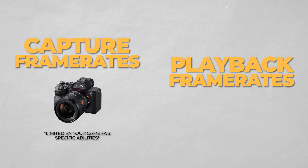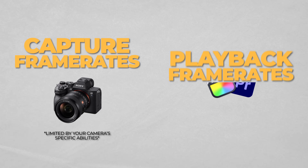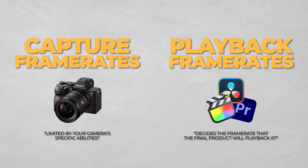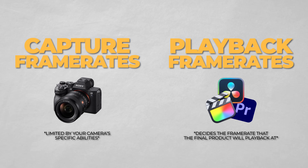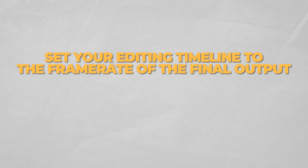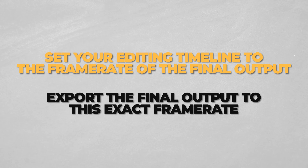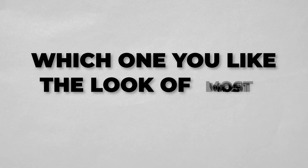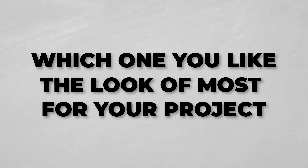Then there is the playback frame rate, which is chosen in your editing software and decides the frame rate that the final product will play back at. Generally, you want to set your editing timeline to whatever frame rate you want the final output to be, and then also export at that same frame rate.